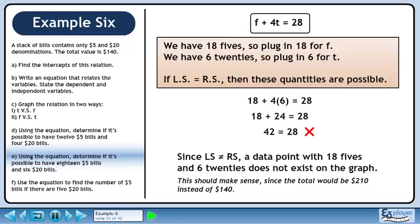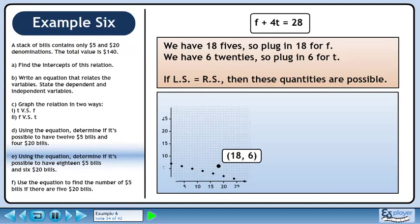This should make sense since the total would be $210 instead of $140. In the first graph from Part C, we can see that the ordered pair 18, 6 does not lie on the graph.